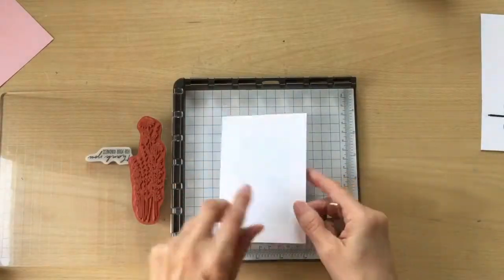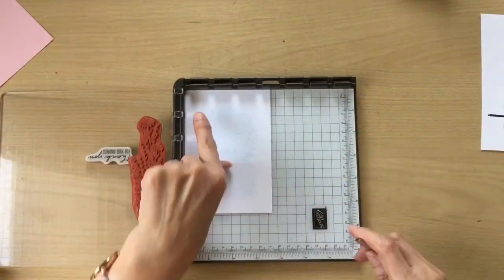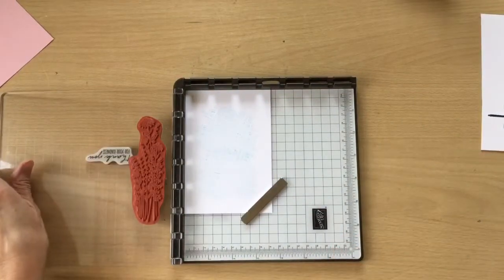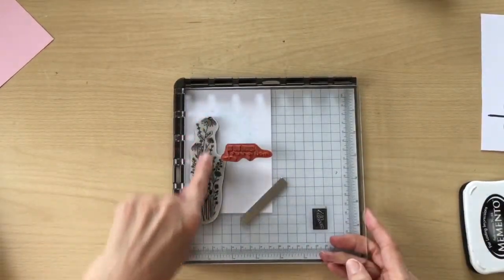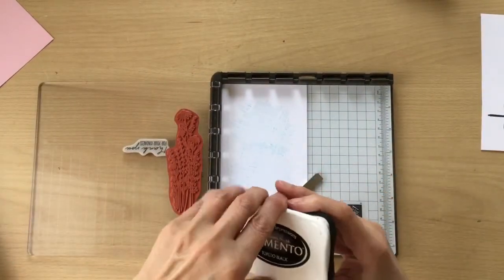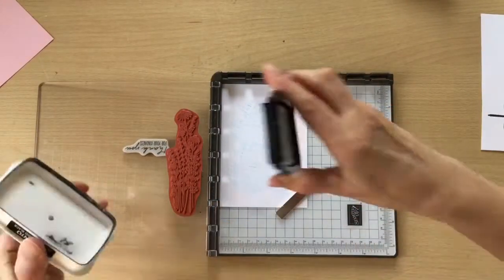I've put my Basic White in here, the piece that we've already done the background on. This is my Stamparatus and I'm just going to stamp this pretty flower design and I'm going to use black Tuxedo Black ink.